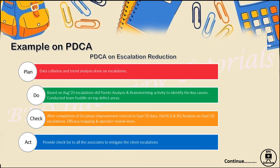Now let's see an example of PDCA for an escalation reduction process. In XYZ process there are multiple escalations — from the client on certain parameters, or where an associate makes frequent mistakes impacting the customer. My plan here is to reduce escalation, and for that I need raw data and a trend analysis on escalations. In the Do phase, I will take two to three months of data and do a Pareto analysis.